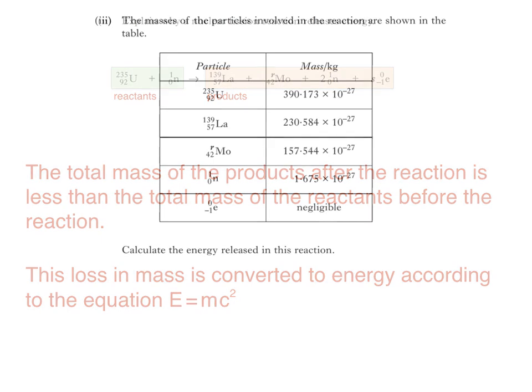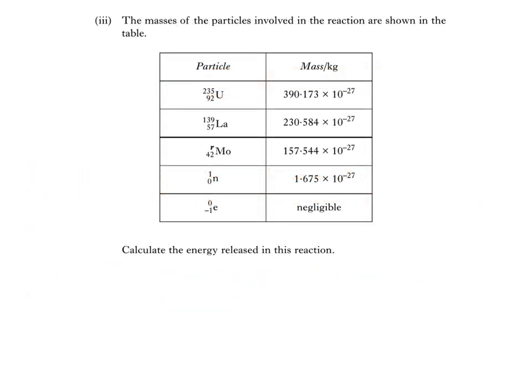Here it is. Part 3 says, The masses of the particles involved in the reaction are shown in the table. We're then asked to calculate the energy released in this reaction. We'll need more space to calculate the answer. So the first thing I'll do is delete the last entry in the table, since it says that the mass of the electron is negligible. Electrons do have a mass, although it's so small that it won't affect our answer to this question, so it can be ignored.